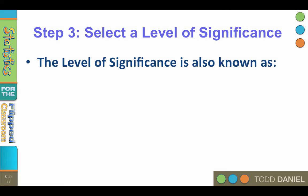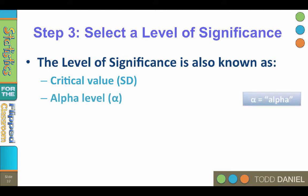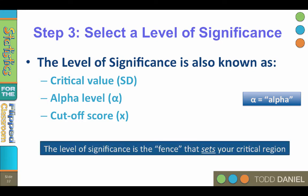The level of significance is the alpha value. The alpha value is the same as the critical value, both of which mean the same as the cutoff score. What to call it depends on how you're measuring it. If you're talking in terms of how many standard deviations it is from the mean, you might call it a critical value. If you're talking about an alpha level, then you might say alpha equals .05. If you're looking at x values on the number line, it will be your cutoff score. However, regardless of what you call it, the level of significance is the fence that sets the critical region.